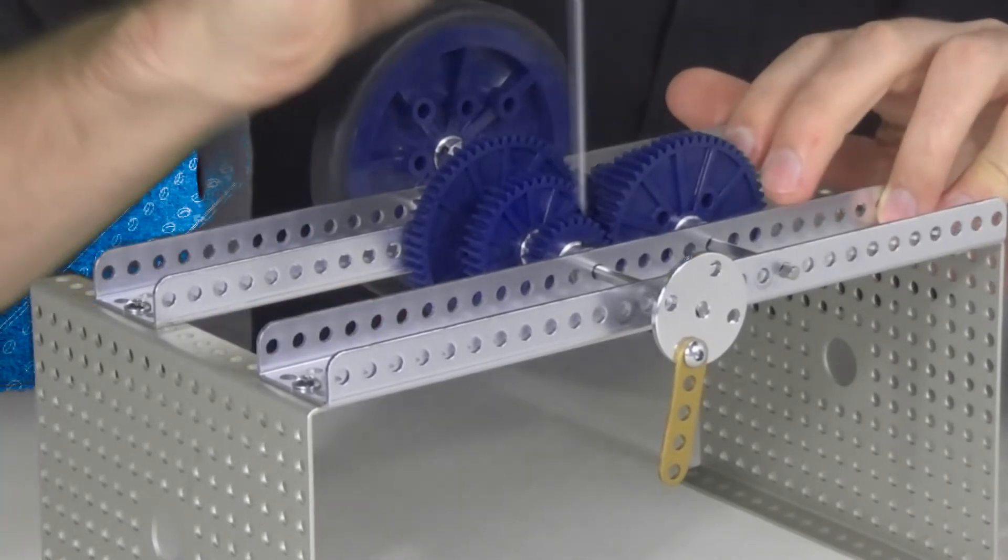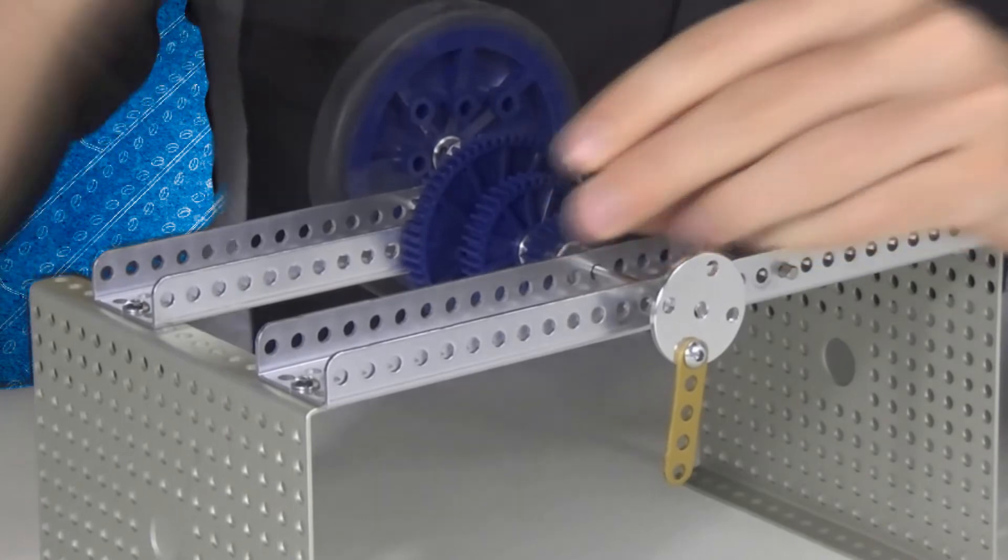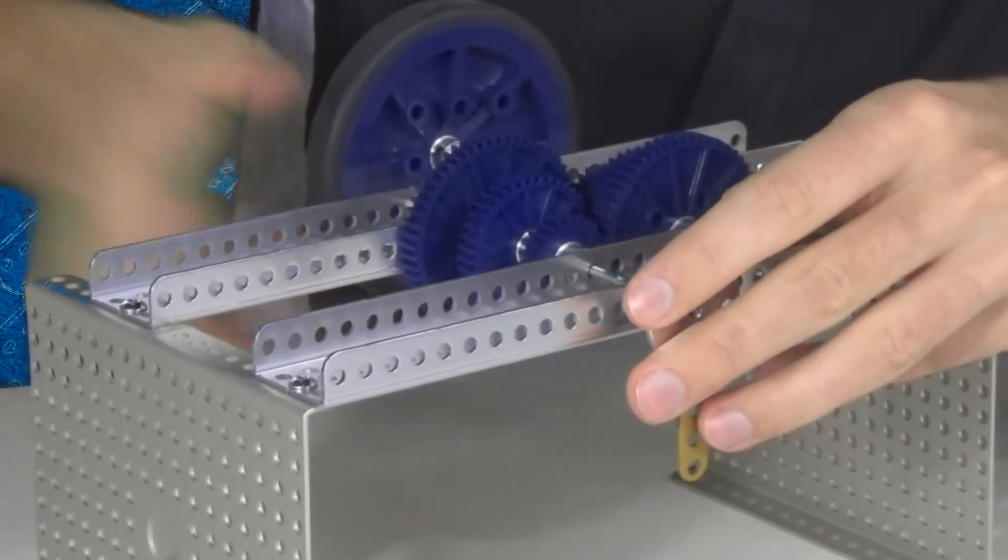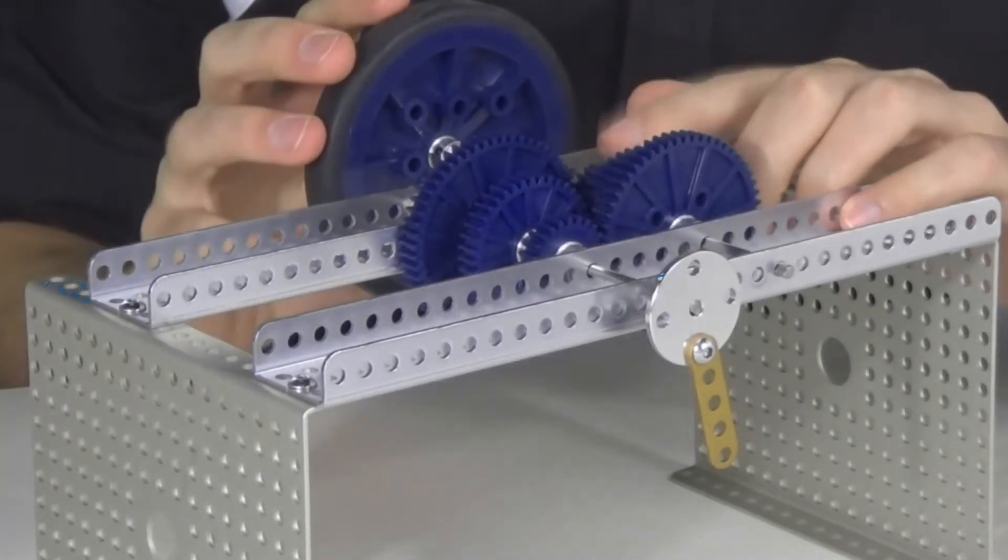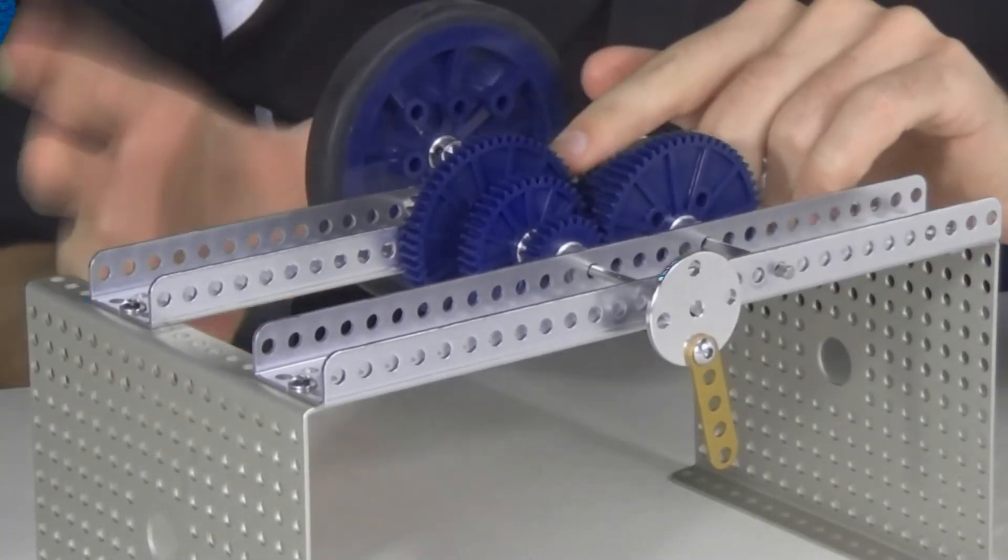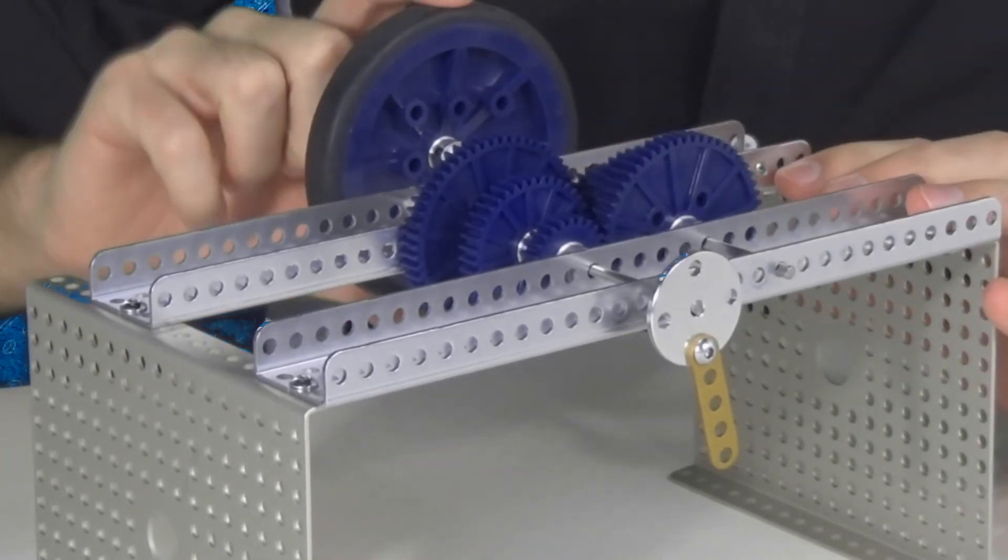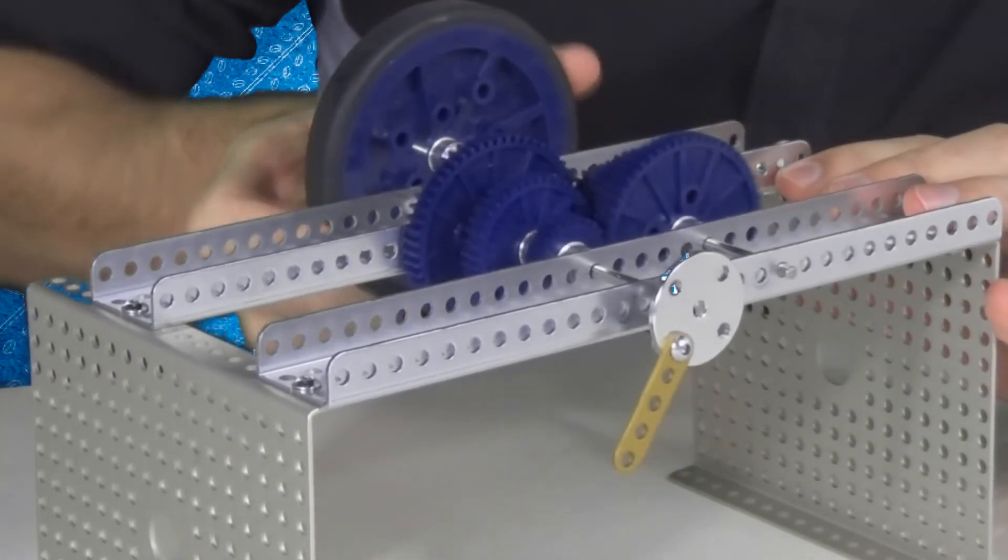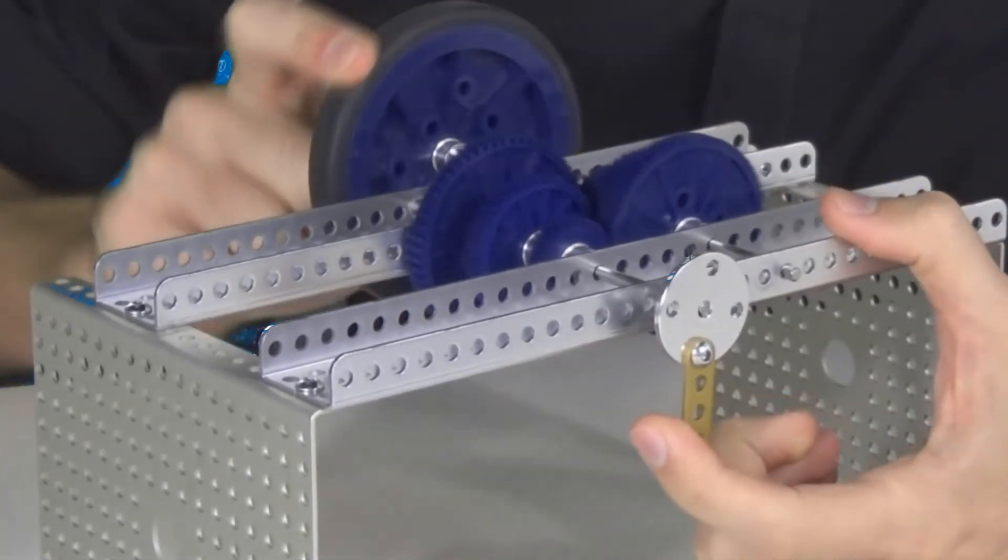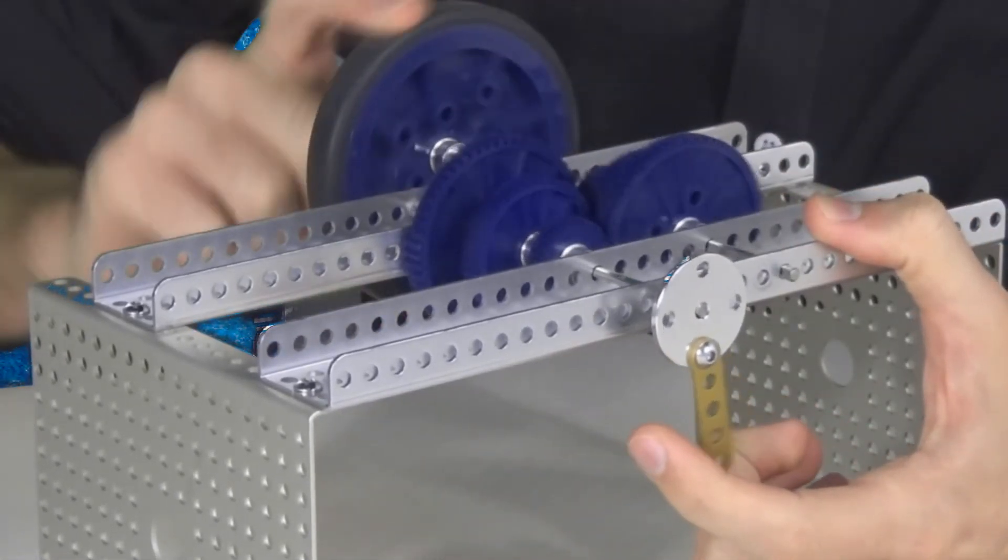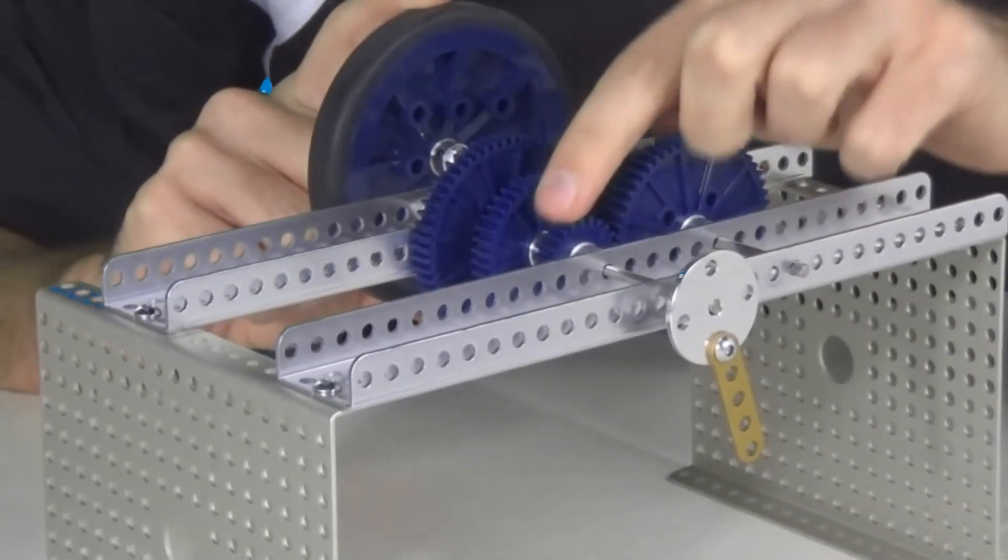Now if I take that off the smallest gear and instead attach it to the biggest gear, now we have a ratio of 24 to 56, so that's the same thing as a seven to three ratio. I'll still turn this 90 degrees and you can see how that bearing just barely moves. But now the torque coming out on that bearing is much more than on the biggest gear to the smallest gear.